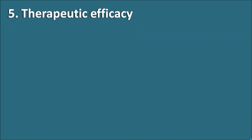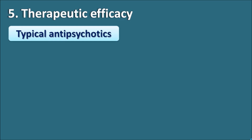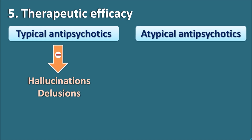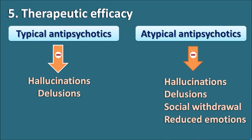The fifth difference is therapeutic efficacy. Typical antipsychotics can relieve positive symptoms of psychosis such as hallucinations and delusions, but they cannot affect the negative symptoms. Atypical antipsychotics, on the other hand, can relieve not only hallucinations and delusions but also social withdrawal and reduced emotions in patients.